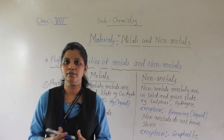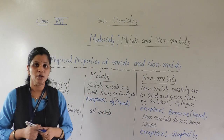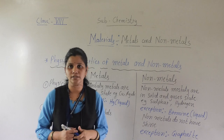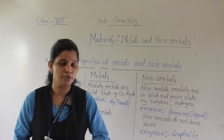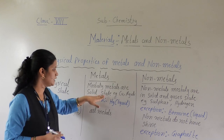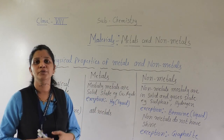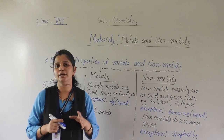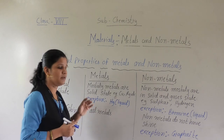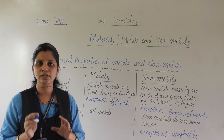Physical state — you know the states: solid, liquid, and gases. So, in which state do metals and non-metals occur or are found? If you see, mostly metals are in solid state. Examples: copper, Ag, Au — mostly all metals are in solid state. But there are some exceptions. Mostly all are in solid state.